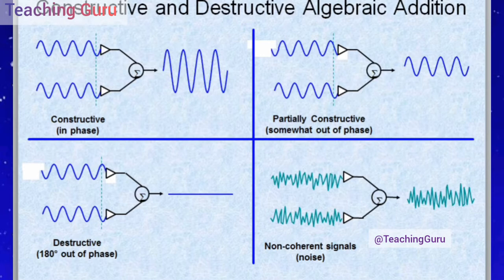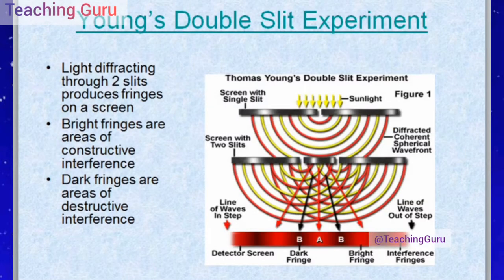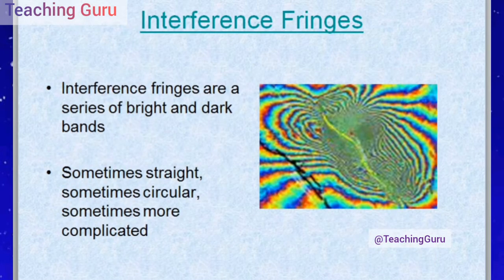This diagram of constructive and destructive interference is very important for examination. Young's double slit experiment: light diffracting through two slits produces fringes on a screen. Bright fringes are areas of constructive interference; dark fringes are areas of destructive interference. The figure shows interference fringes as a series of bright and dark bands — sometimes straight, sometimes circular, and sometimes complicated patterns.